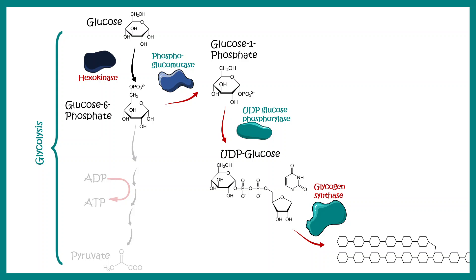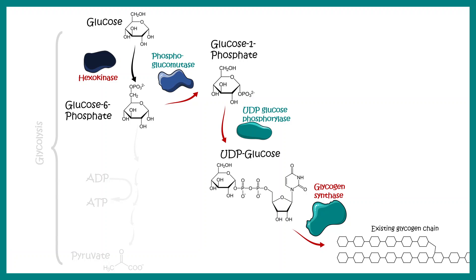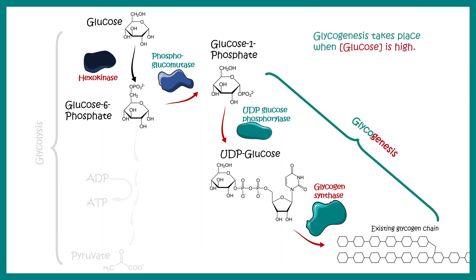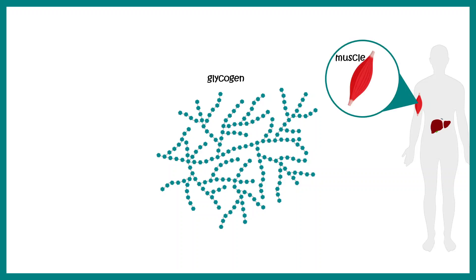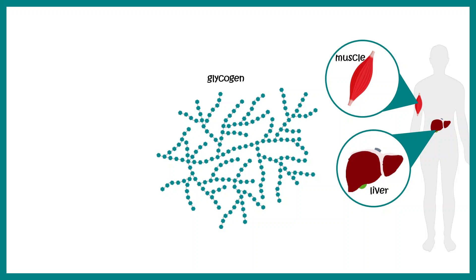This process is known as glycogenesis — the creation of glycogen. Glycogenesis takes place when glucose levels are really high, such as after a meal. It is stimulated by several hormones like insulin. Glycogen is metabolized in the liver and in the muscle.